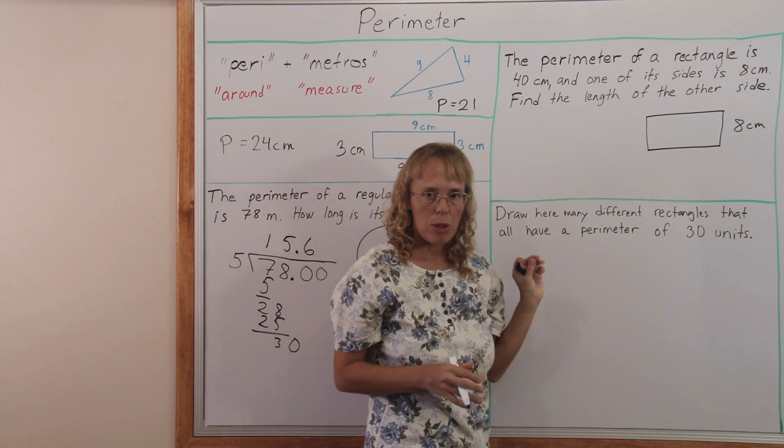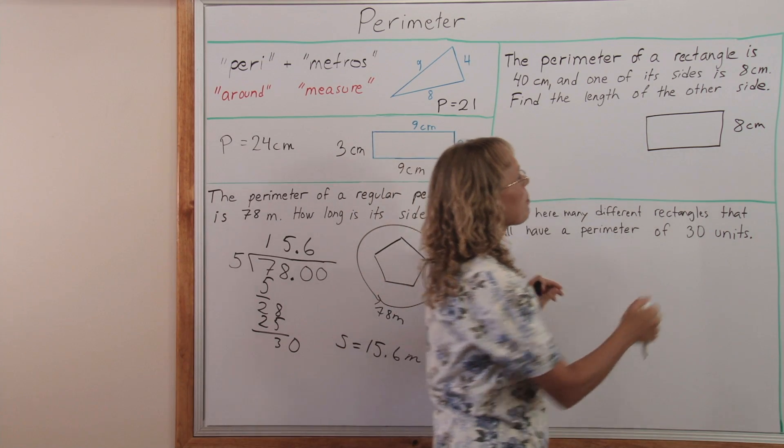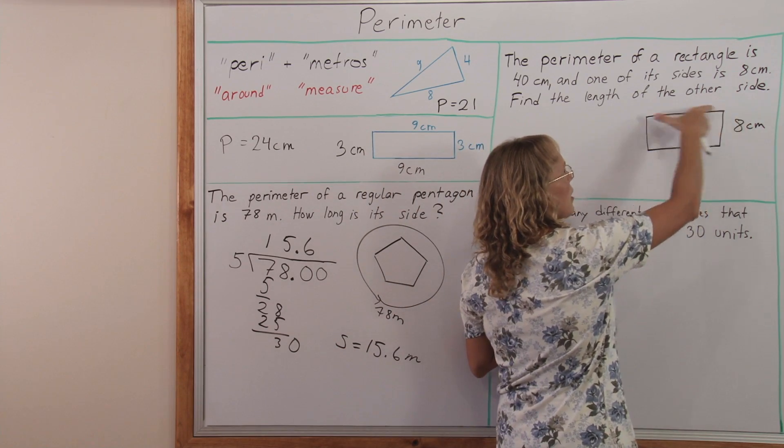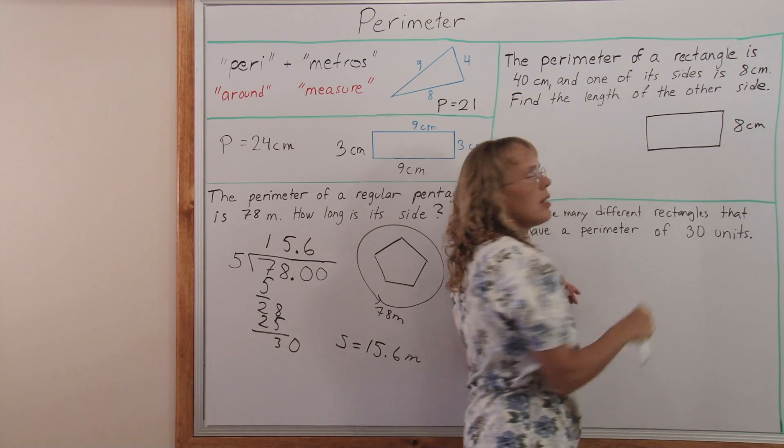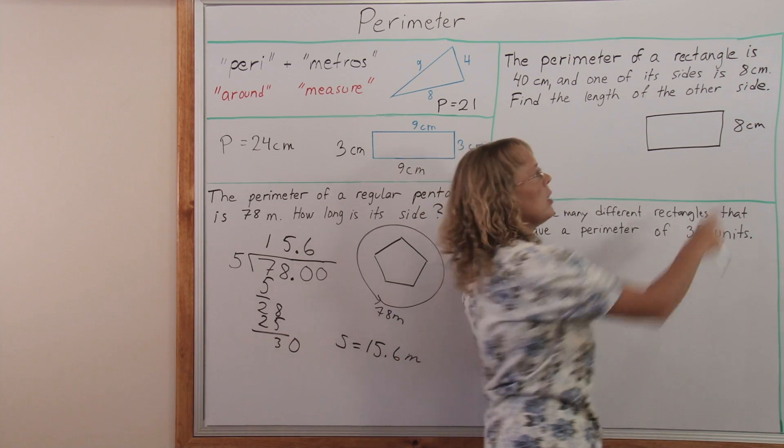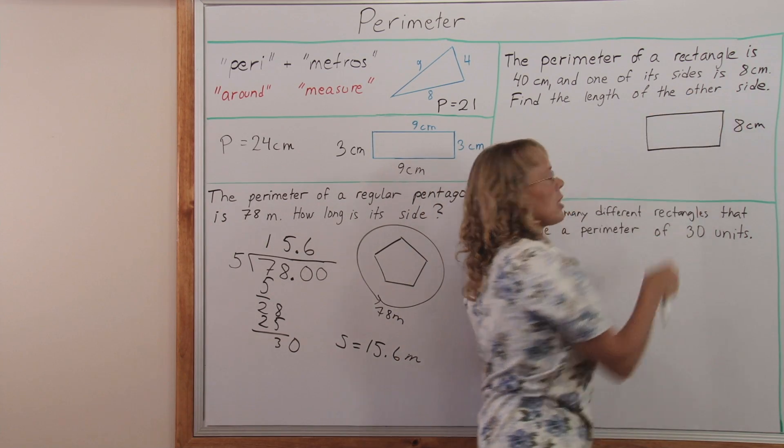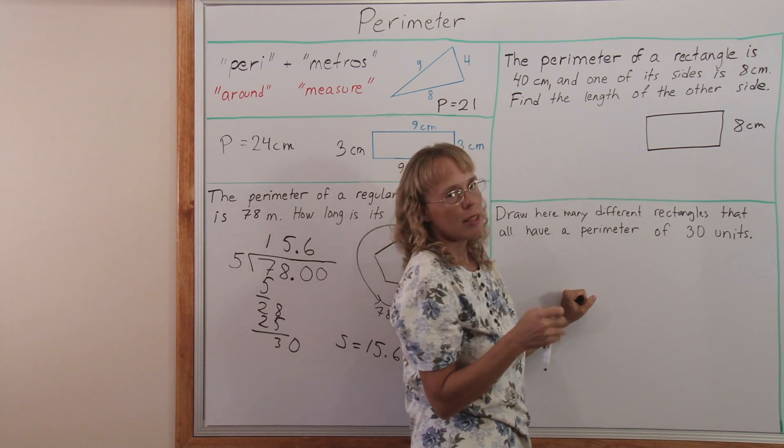The way to solve all these type of problems is to think that this side and this side together are half of the perimeter. So 8 and this side must be half of 40 or 20 centimeters.